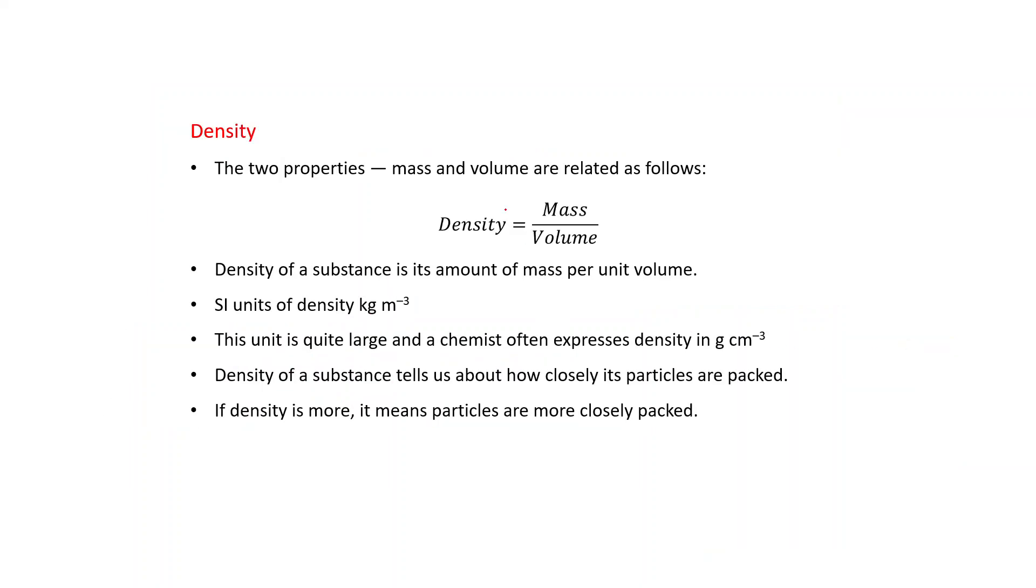Density. Two properties, mass and volume, are related as follows. That is, mass per unit volume, or mass by volume, that is equal to density. Density of a substance is its amount of mass per unit volume. SI unit of density is kilogram per meter cube, but generally this is a large unit. That is why density is generally expressed in gram per centimeter cube. Density of a substance tells us about how closely its particles are packed. If density is more, it means particles are more closely packed.